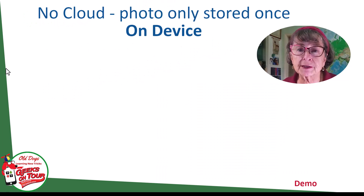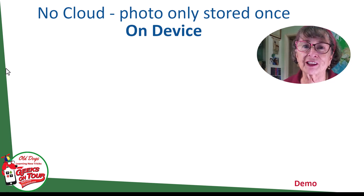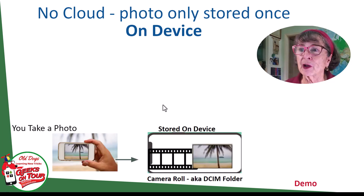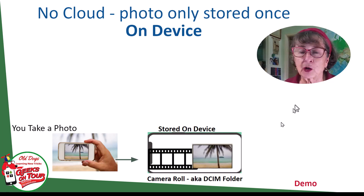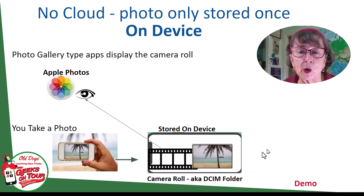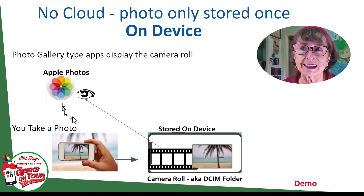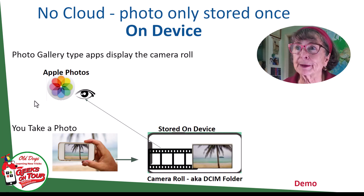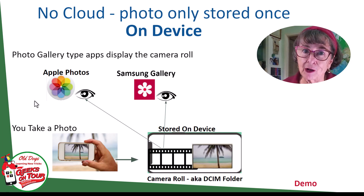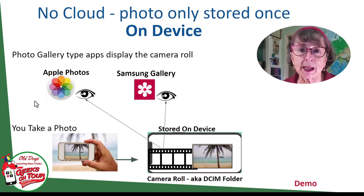First I'm going to talk just about the photos that are on your device — no cloud involved. When you first take a photo it is stored on your device, in something called the camera roll, or sometimes it's called the DCIM folder — that stands for Digital Camera Images. If you have an iPhone you probably use the Apple Photos app, whose job it is to show you the photos that are in your camera roll. The photo isn't actually stored in Apple Photos; it's stored on the device — Apple Photos shows it to you. We call that a gallery app, and if you have a Samsung the app is actually called Gallery. Its job also is to display the photos stored in your camera roll DCIM folder.